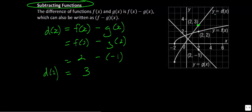Let's look at the domain for d(x). g(x) is available for anything, and f(x) must be greater than or equal to −2. So the domain for our new function d(x) is x ≥ −2, because we're looking for what is common between the two functions.